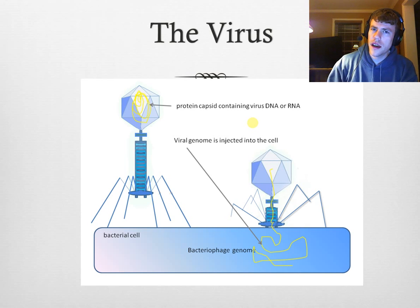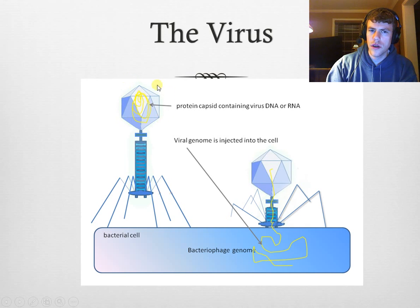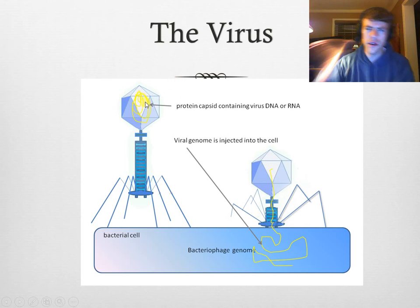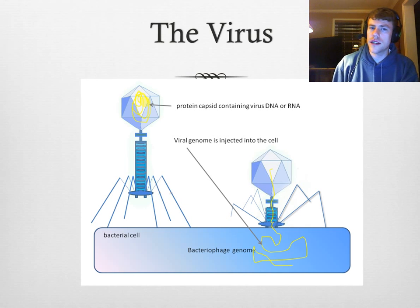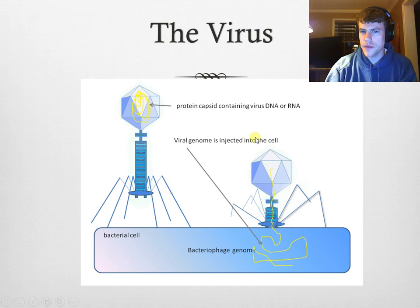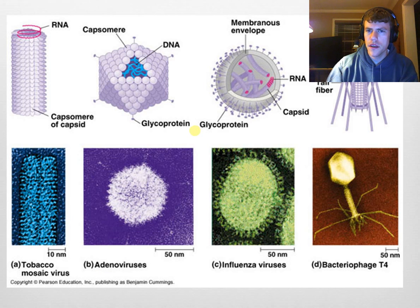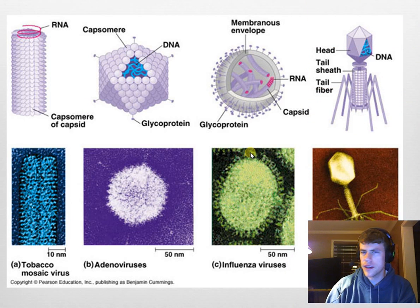Viruses generally have two main parts, although they come in many different shapes and sizes. They have a protein coat or capsule, and inside that protein coat they have some sort of genetic information, either DNA or RNA. They're made of these organic molecules, just like living things are, and yet they're not alive. They do come in many different shapes and sizes, but you'll see that they have all of these features in common.